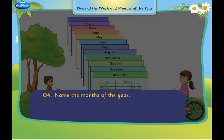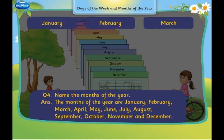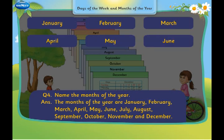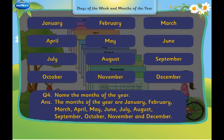Name the months of the year. January, February, March, April, May, June, July, August, September, October, November and December.